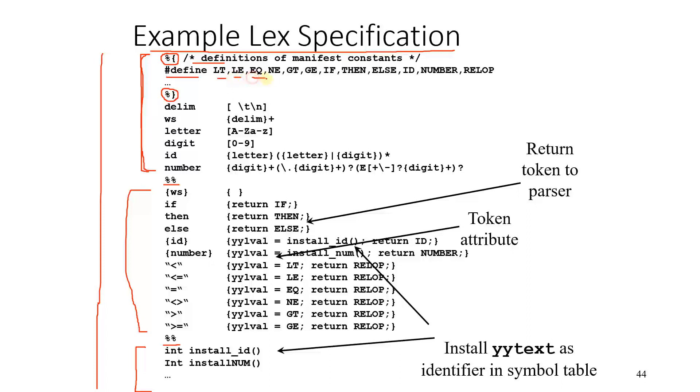Using the macro has defined: LT is less than, LE or equal to, equals to, not equals to, greater than, greater than equals to, if, then, else, identifier, number, relational operator. We define each of them. This dot dot dot tells us that here are a lot of C definitions inside this has defined.